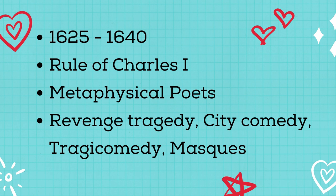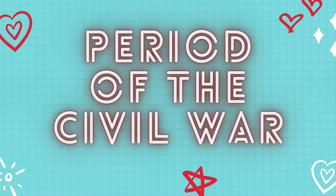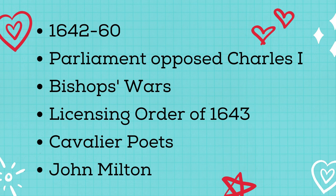Next comes the period of the Civil War, with a timeline from 1642 to 1660. This period was marked by the Civil War between the Parliament and Charles I. Charles I was beheaded and then Oliver Cromwell took over the position of Lord Protector. The Bishops' War was a prelude to this Civil War. The Licensing Order of 1643 was passed in this period. Cavalier poets like Herrick, Carew, Waller, Suckling, and Lovelace lived during the period of the Civil War.